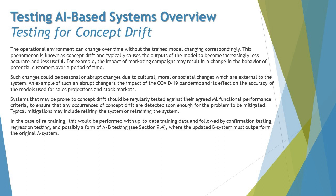Such changes could be seasonal or abrupt changes due to cultural, moral, or societal changes which are external to the system. An example of such an abrupt change is the impact of the COVID-19 pandemic and its effect on the accuracy of models used for sales projections and stock markets.